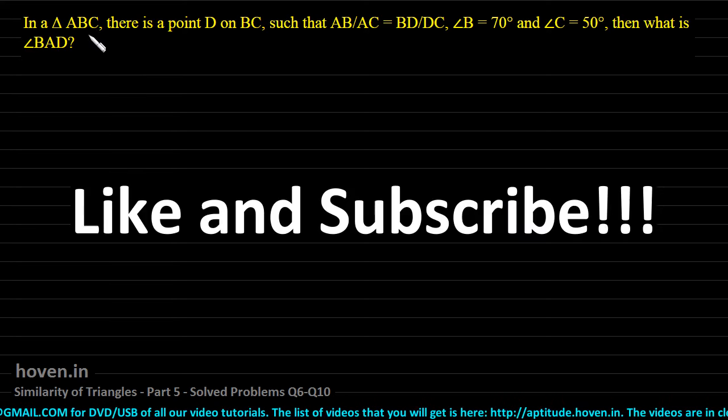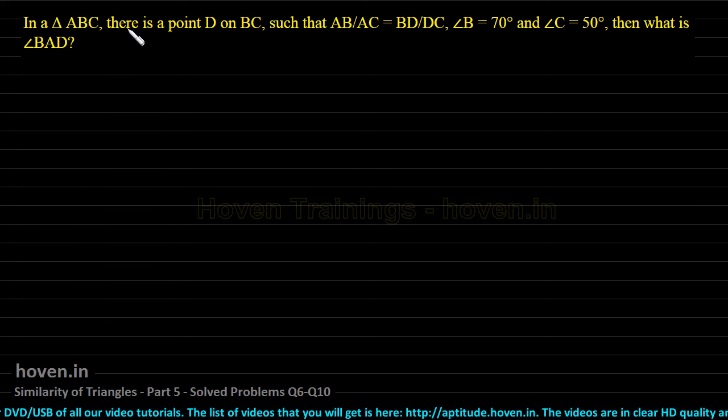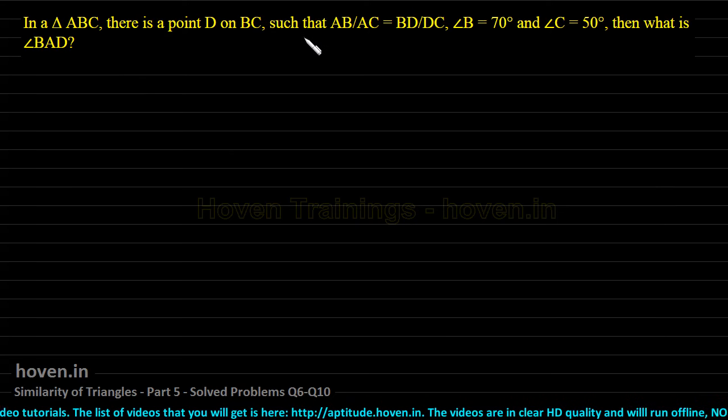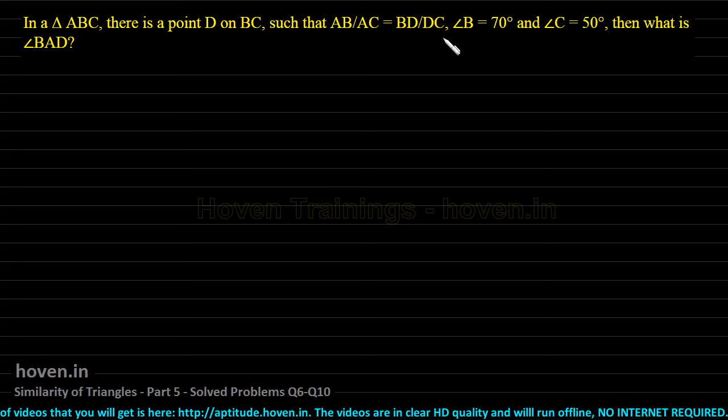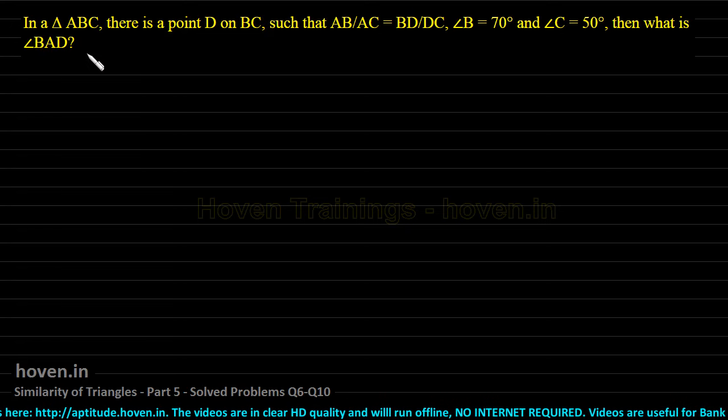In a triangle ABC, there is a point D on BC such that AB by AC is equal to BD by DC and angles B and C have been given. Then what is angle BAD?